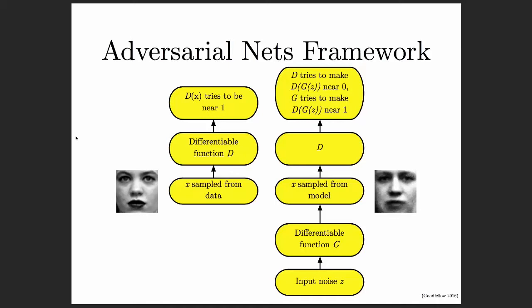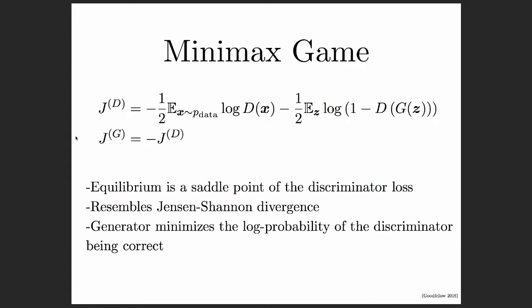During training, the discriminator is fed real examples and tries to output a probability close to one, and is also fed fake examples from the generator, in which case it tries to output values close to zero. The generator tries to make the discriminator output values close to one. After both players are trained to do their tasks as best as possible, there is a Nash equilibrium that the players should approach in which the generator replicates the data distribution exactly. We can formulate this as a minimax game where the value function is the likelihood for the binary classifier determining whether examples are real or fake. The equilibrium is a saddle point — a local maximum with respect to the discriminator and a local minimum with respect to the generator.